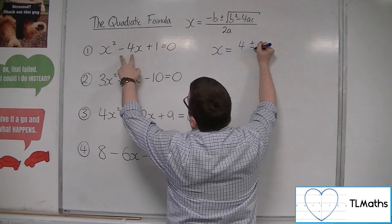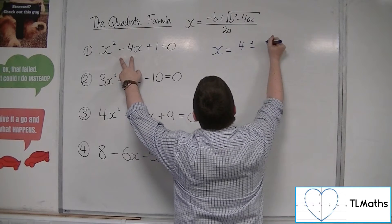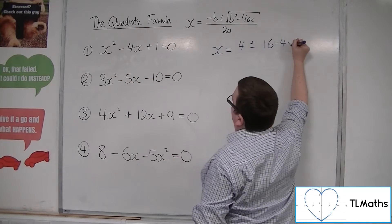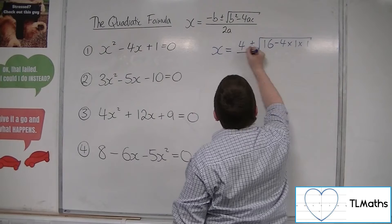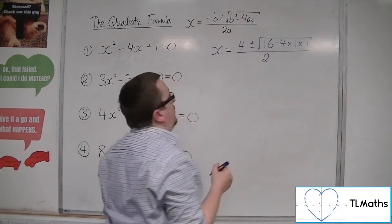Plus or minus b squared, so minus 4 squared is 16, take away 4 times 1 times 1, square rooted all over 2a, so just 2.